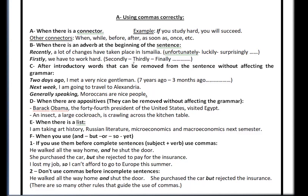Rule C: after introductory words that can be removed from the sentence without affecting the grammar. For example: 'Two days ago, I met a very nice gentleman.' This introductory part can be removed — you can just say 'I met a nice gentleman.' Similar examples: 'Seven years ago,' 'Three months ago,' 'Next week, I'm going to travel to Alexandria,' or 'Generally speaking, Moroccans are nice people.'